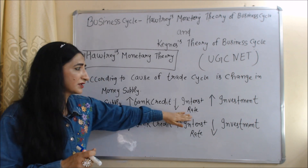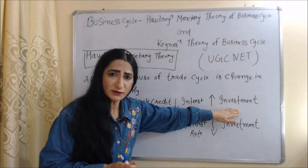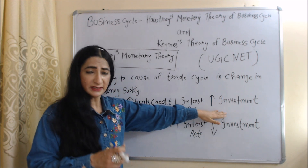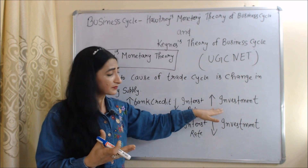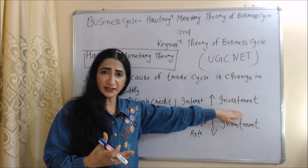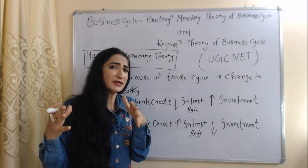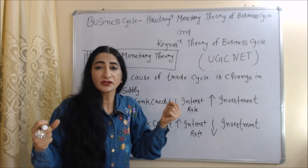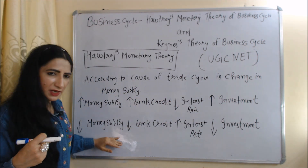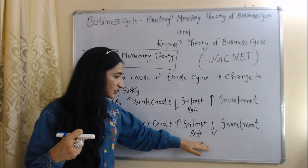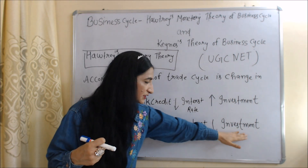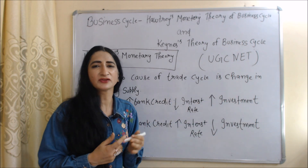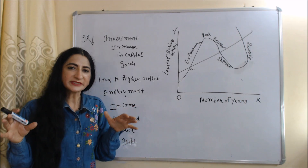When interest rate falls, people will take more money from banks for investment purpose, because now interest rate is very low. As a result, investment will increase in the economy, and our economy will move towards the expansion path of the business cycle. On the other hand, when money supply falls, bank credit also falls, interest rate increases, investment falls, and the economy moves towards recession and depression.